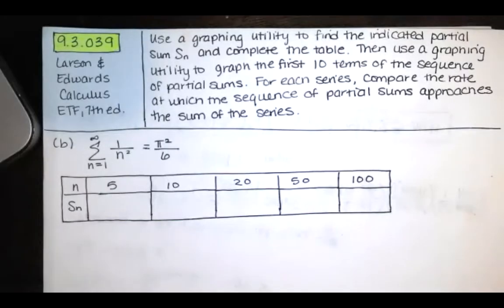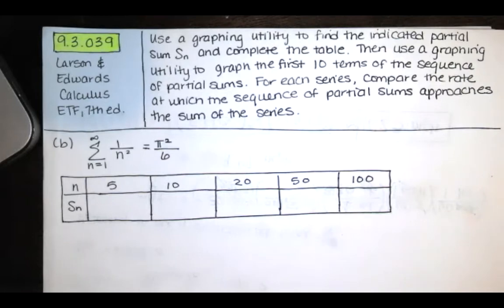In this video, we solve problem 9.3.039 from Larson and Edwards' Calculus Early Transcendental Functions text, 7th edition, and we're just solving part B of this multi-part problem. It says: use a graphing utility to find the indicated partial sum S sub n and complete the table. Then use a graphing utility to graph the first 10 partial sums of the sequence of partial sums. For each series, compare the rate at which the sequence of partial sums approaches the sum of the series.